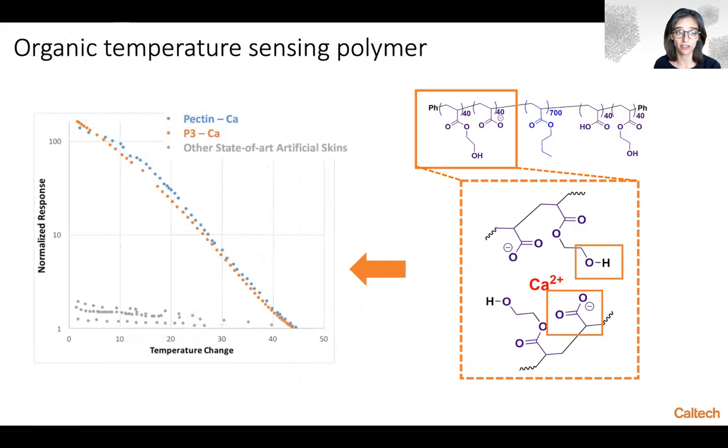Interestingly, when we compare the response of pectin and our so-called P3 ABA polymer, you see in red and blue on the diagram on the left that the two responses match quite well, showing that it is indeed possible to create synthetic analogs of pectin for electronic devices in a more controlled and stable way.